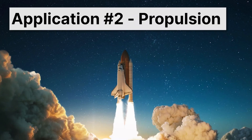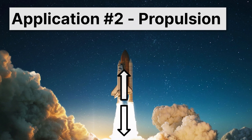Let's move on to the second application of conservation of momentum: propulsion, which just means getting something moving. Here, the space shuttle is moving towards outer space by pouring out hot gases down towards the earth. Conservation of momentum actually demands that there be an upward force on this space shuttle, pushing it to outer space.